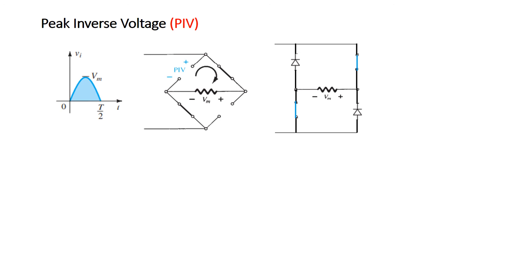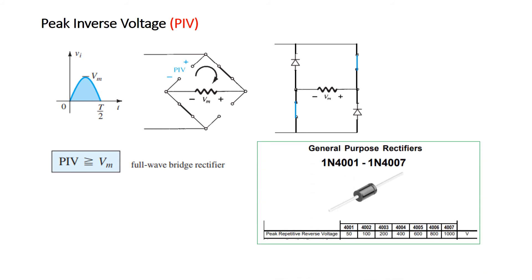For your knowledge, there is a term called Peak Inverse Voltage (PIV). When a diode is in reverse bias, this is the maximum voltage it can sustain. In this circuit we are applying Vm across the reverse-biased diode, so the PIV must be equal to or greater than Vm. Looking at a datasheet example: diode 4001 has a PIV of 50 V — if you apply 60 or 70 V it will burst. Other diodes have PIV ratings of 100, 200, or even 1000 V, and you choose accordingly.